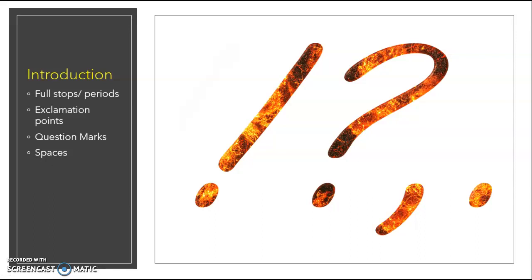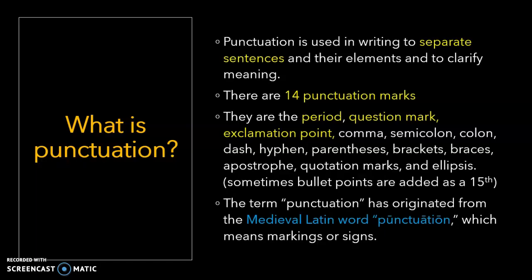So what is punctuation? Punctuation is used to separate sentences or parts of sentences from each other. There are 14 punctuation marks, some would say 15. We are going to concentrate on the full stop, question mark, and exclamation mark, but there are also commas, semicolons, colons, dashes, hyphens, parentheses, brackets, braces, apostrophes, quotation marks, and ellipses, and bullet points count them as well.